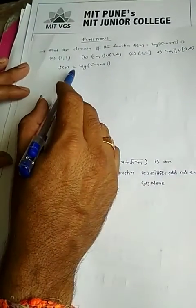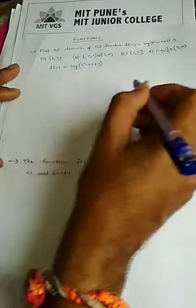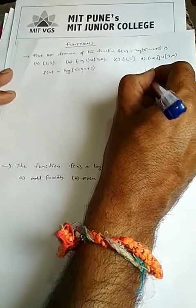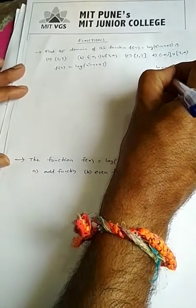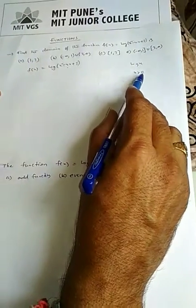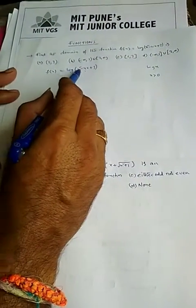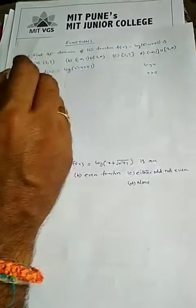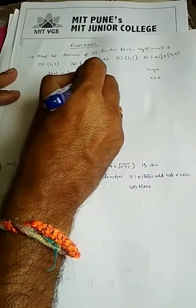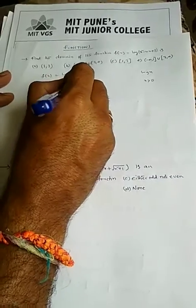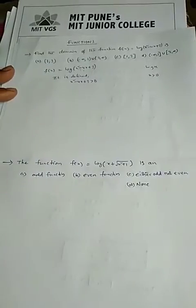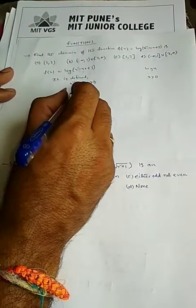This is a domain problem. Since f(x) is in the form of log(x), and log(x) is defined only when x is strictly greater than 0, we require x² - 4x + 3 > 0.